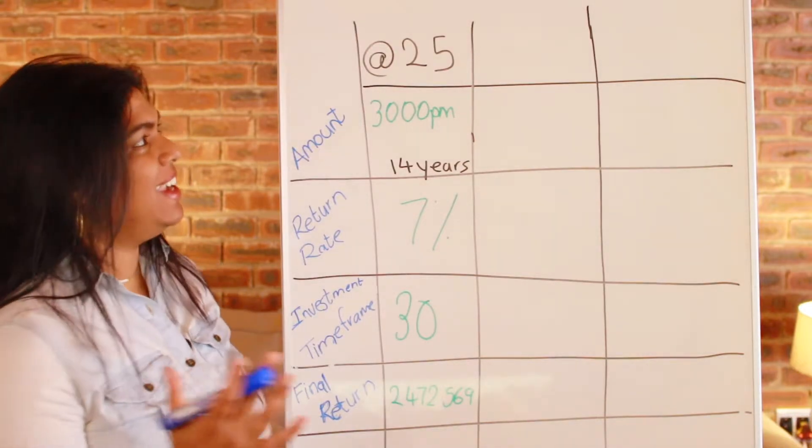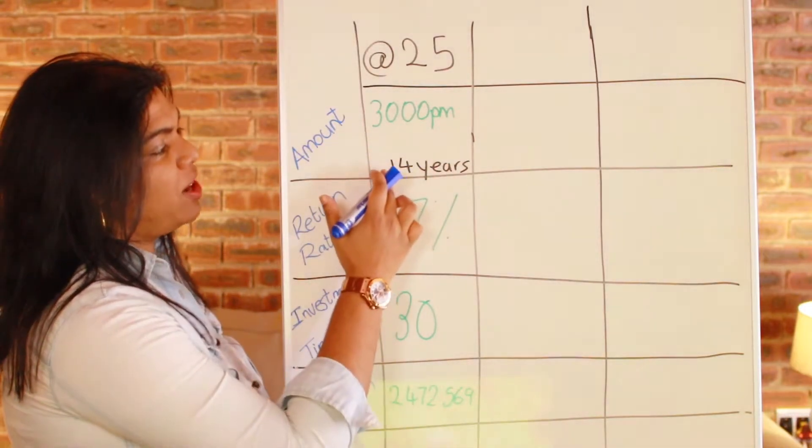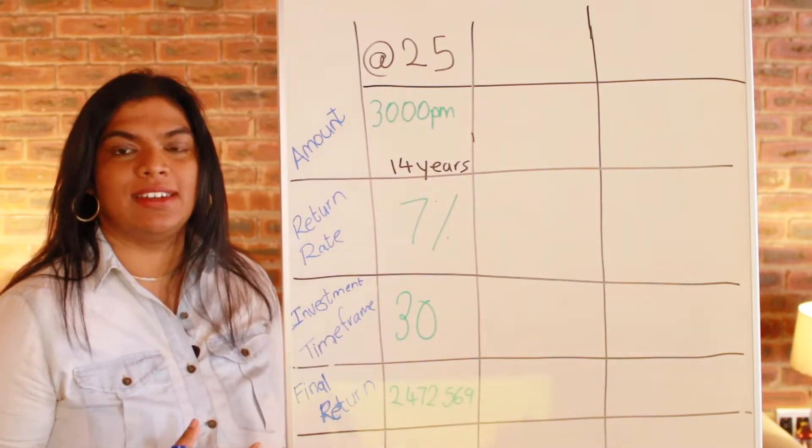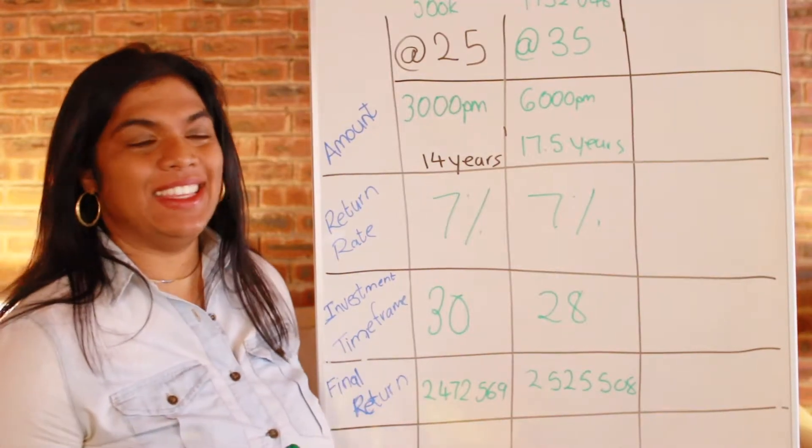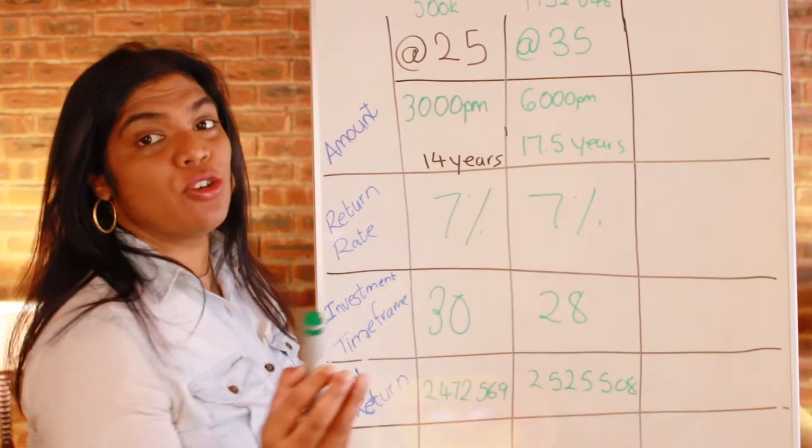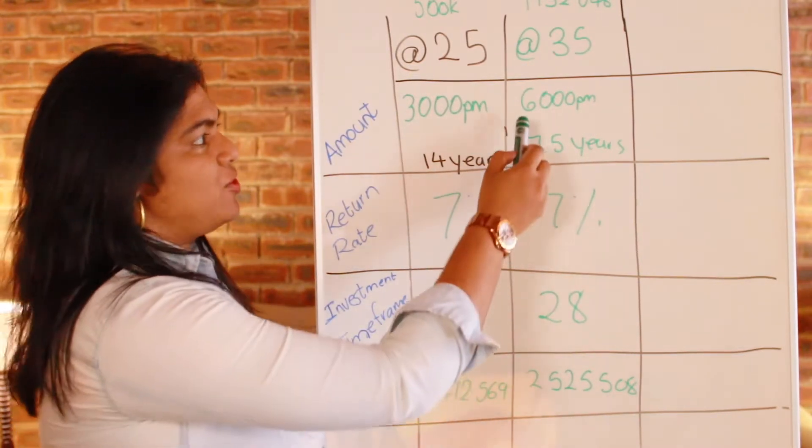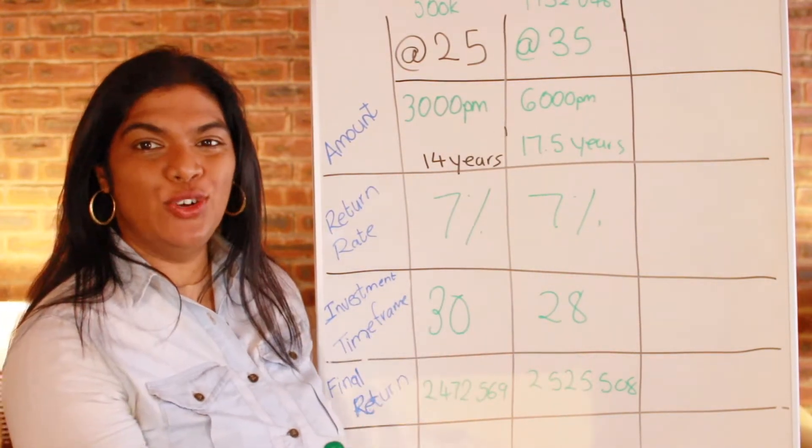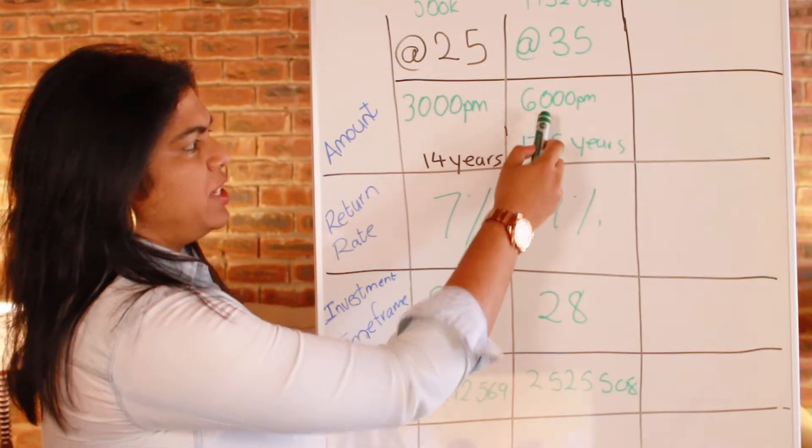So you can see by just investing 3,000 rand a month only for 14 years, you can get this kind of return. So compared to investing at 35, to get the similar sort of return, you would have to invest 6,000 rand a month. And according to the tax-free rules, only half of this will go into a tax-free investment.